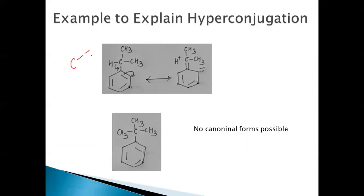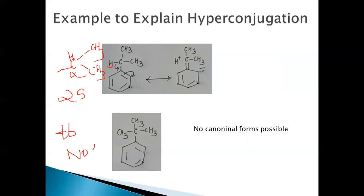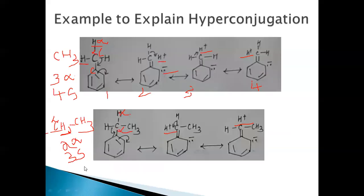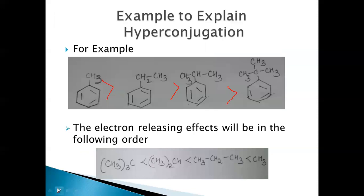When the isopropyl group is attached to an sp2 carbon, the number of alpha hydrogens is only one, so only two canonical structures are possible. When the tertiary butyl group is attached to a benzene ring, there are no alpha hydrogens, so no resonance structures are possible. As the number of alpha hydrogens decreases, the number of hyperconjugation structures decreases, and therefore stability decreases.